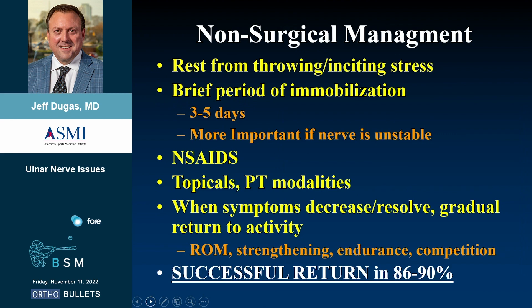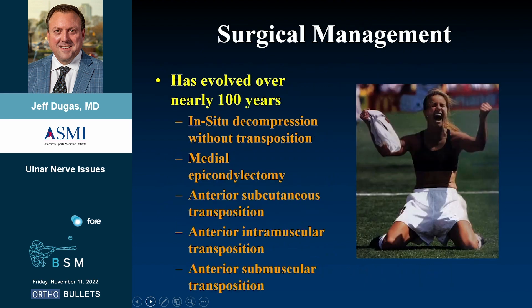Treatment should begin with non-surgical management: rest from throwing, NSAIDs, topicals, and modalities. Throw the kitchen sink at decreasing inflammation. The ulnar nerve is probably the most tolerant nerve in the body — you can handle it, pull on it, and it will come back. As symptoms decrease or resolve, gradually return to activity. There is a high rate of return if addressed early. The challenge is athletes coming forward after five months rather than at symptom onset.